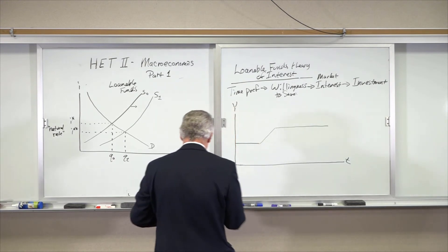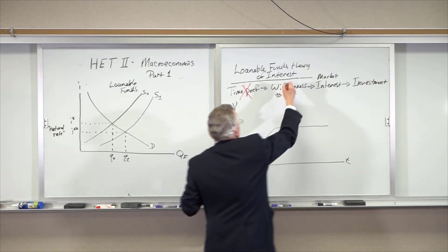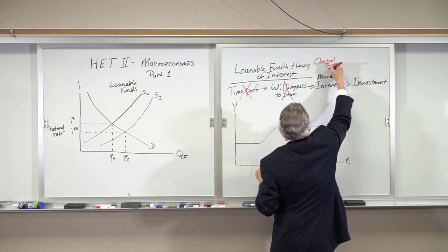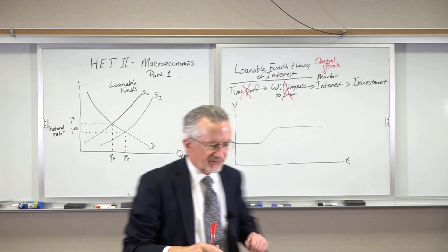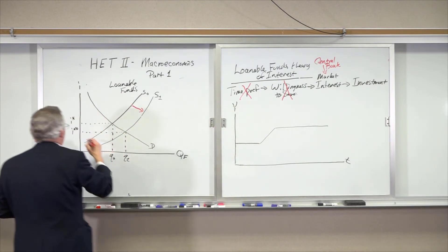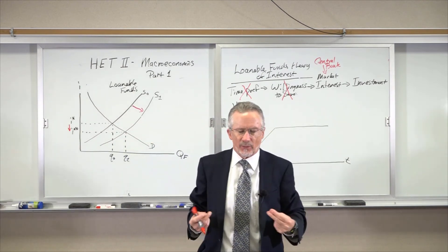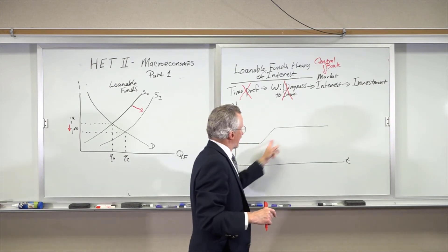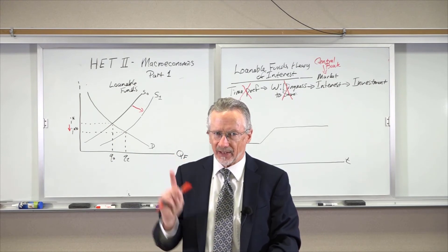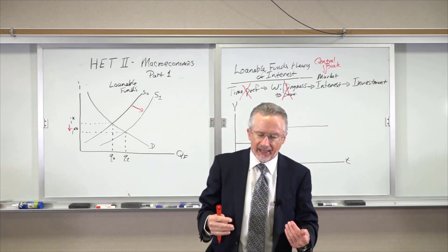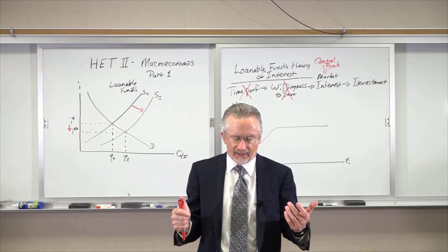But suppose instead this shift was not a change in time preferences or willingness to save — rather it was a central bank simply expanding liquidity. The central bank extends new credits. We get the same shift and the same drop in interest rates, but it's no longer accurately reflecting people's time preferences. So Mises argues there will be a boom as before, but consumers did not cut back on consumption. Competition for resources begins driving up prices — more money or credit is being pumped in, and the sectors that receive funds first will expand relative to others, as Cantillon noted back in the early 1700s.